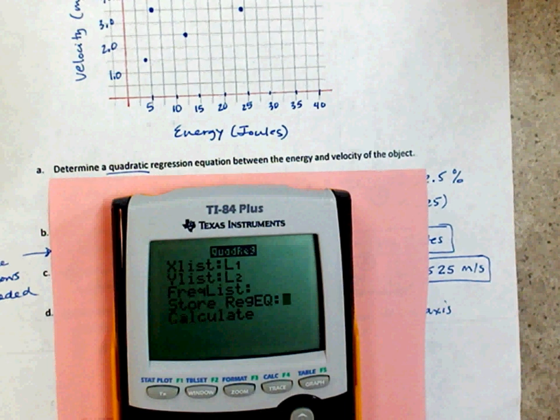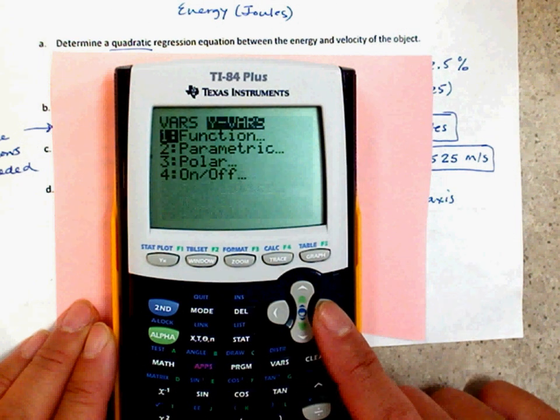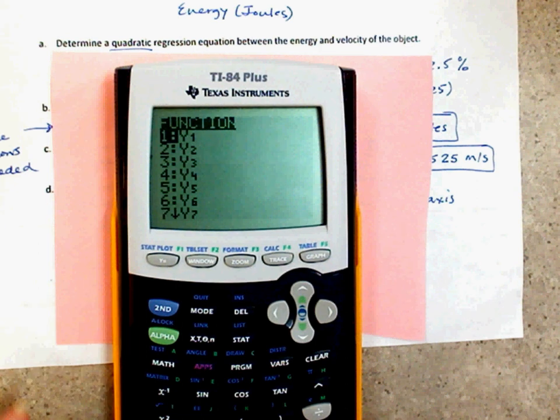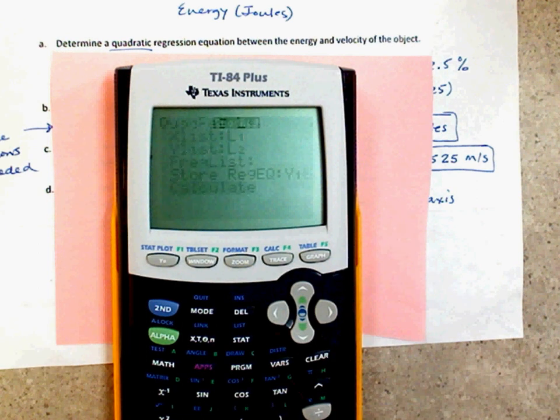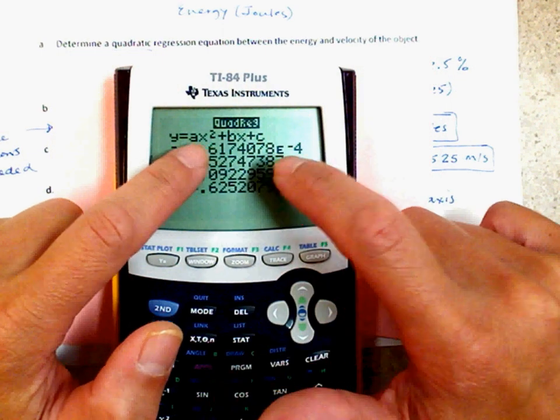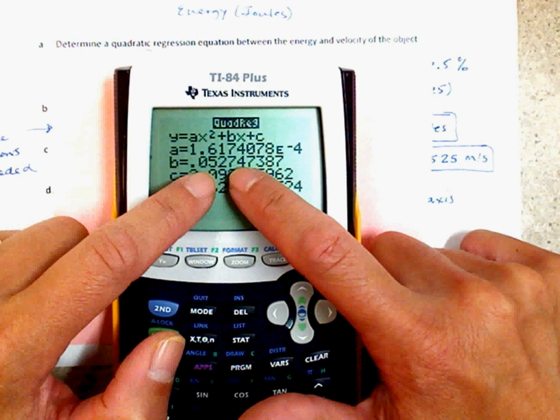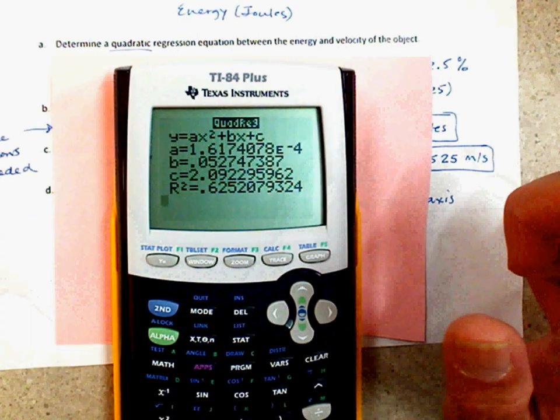So, you go to, to store, VARS. Right-click to Y VARS. Function, Y1. And I'm going to tell it to calculate. So, notice it's a square. Ax squared plus Bx plus C. Plug in your A, plug in your B, and plug in your C. And I want to point something out real quickly.